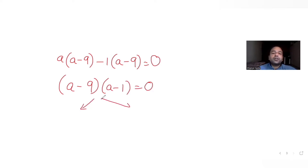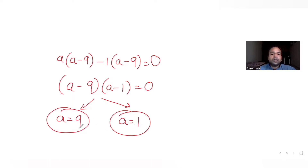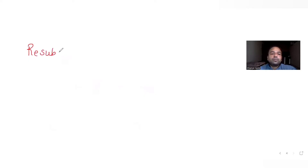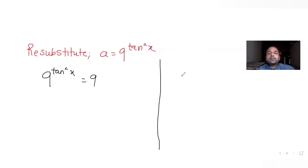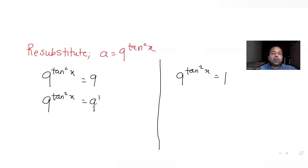This gives two values of a: 9 and 1. Resubstituting a = 9^(tan²x): in the first case, 9^(tan²x) = 9, giving tan²x = 1. In the second case, 9^(tan²x) = 1.